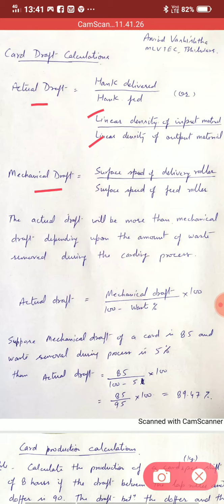As in actual draft we consider linear density. In carding process some waste is removed. Like in cotton we remove 4 to 5 percent waste. That's why linear density of output material will be less than the expected value. So actual draft will be more than mechanical draft. And that depends upon the amount of waste removed during carding process. Actual draft will be equal to mechanical draft divided by 100 minus waste percent multiplied by 100.